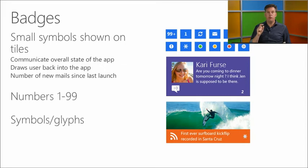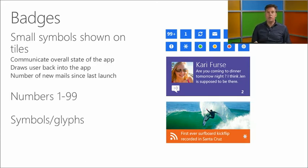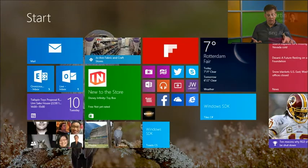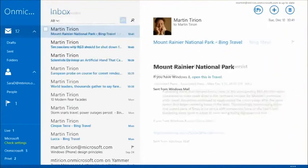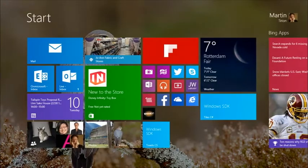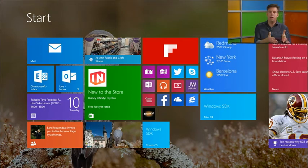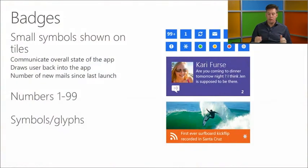You can also use badges — the small symbols like we saw with the mail app showing how many new mails there were. You can use numbers 1 to 99 and various glyph icons as a badge on your tile, communicating the overall state of the app or data and drawing people back. When the user opens the app and sees those items, the badge clears — make sure you do that in your app too.